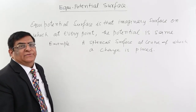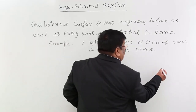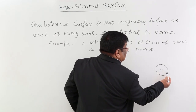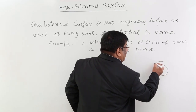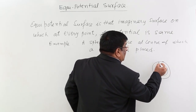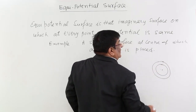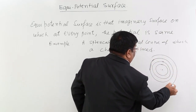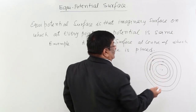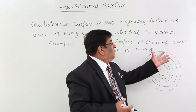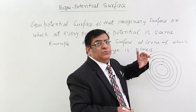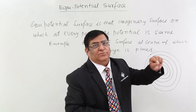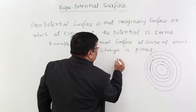Is there only one equipotential surface for a charge, or are there many? The answer is many. At any distance from the point charge, all points at that same distance form a sphere where every point has the same potential — so that is another equipotential surface. In this way, a large number of equipotential surfaces can exist. For brevity, we drop the word 'surface' and call them simply equipotentials.